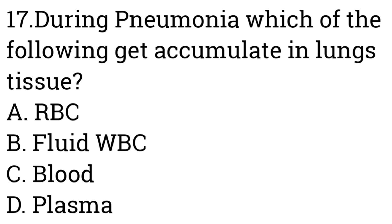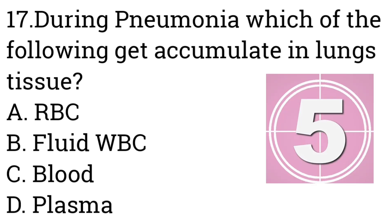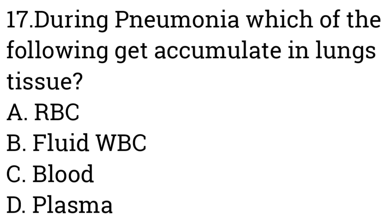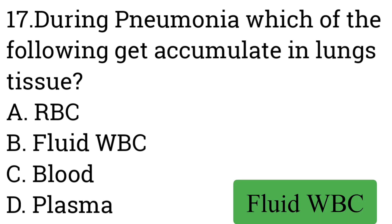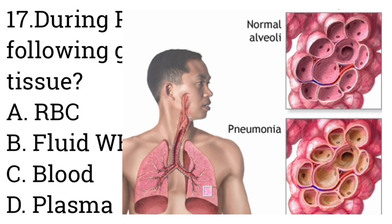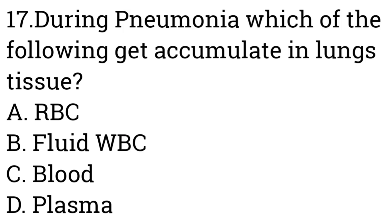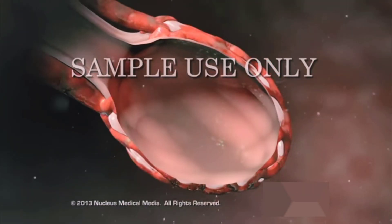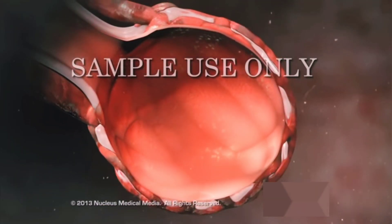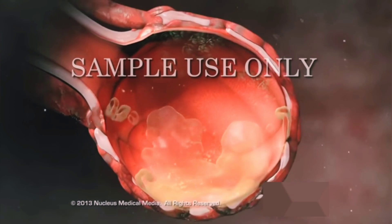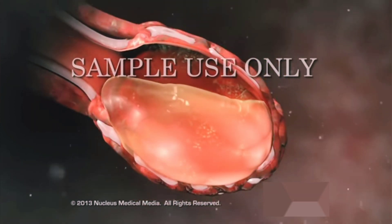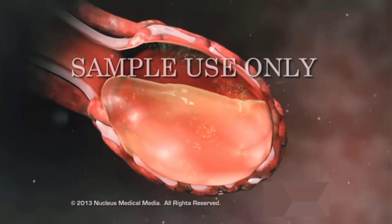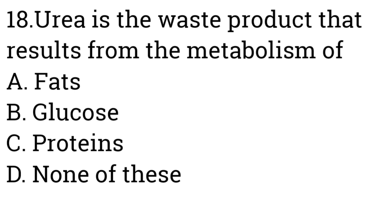Question number seventeen: During pneumonia, which of the following accumulates in the lung tissue? Option A: RBC, B: Fluid and WBC, C: Blood, D: Plasma. Answer is Fluid and WBC. Pneumonia is an infection of the lung caused by bacteria and viruses. The microorganisms multiply and the immune system responds by sending white blood cells to the alveolar tissue to fight the infection, causing the alveoli to become inflamed and filled with pus, fluid, and WBCs.